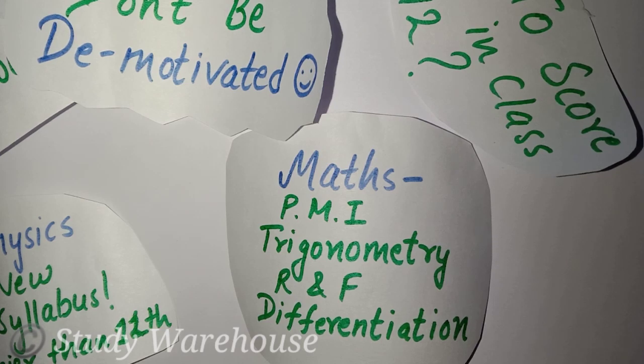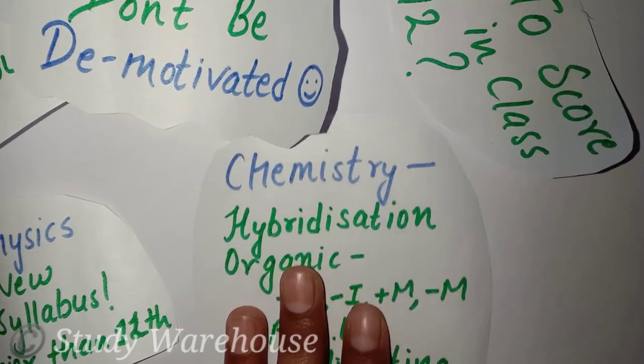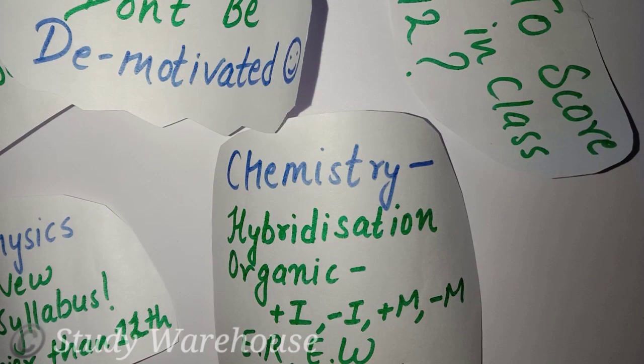Though it is a bit typical in the starting, if you practice it, you'll understand it. Then differentiation - though you can start fresh from Class 12th also, but the formulas are given in Class 11th book, so you can practice it from there. Then comes Chemistry. In Chemistry, you have to study hybridization because it is used in P block and D and F block as well.